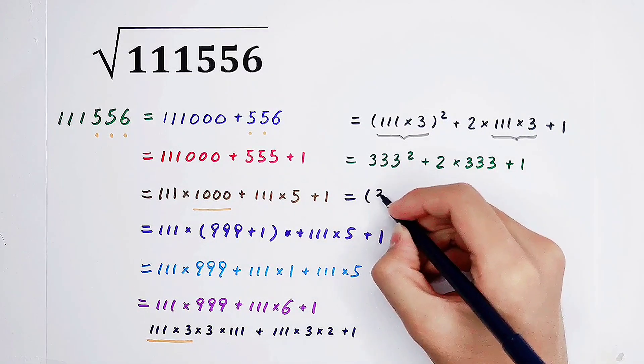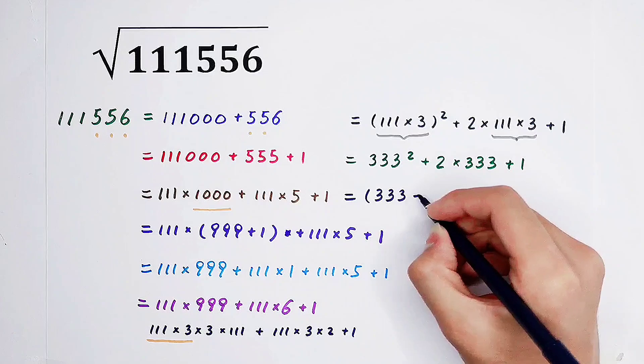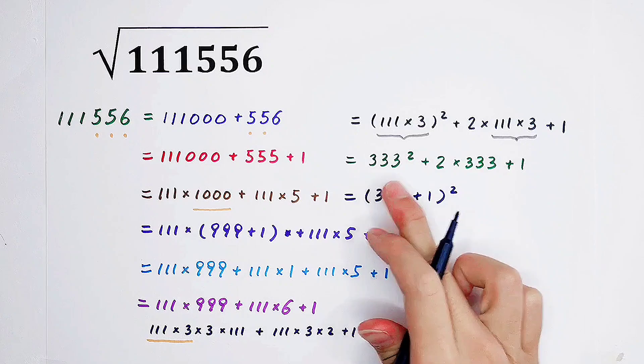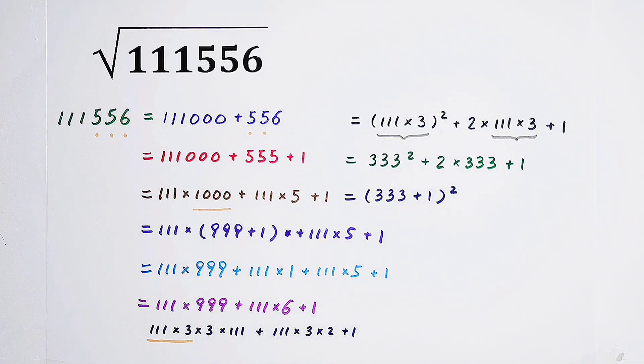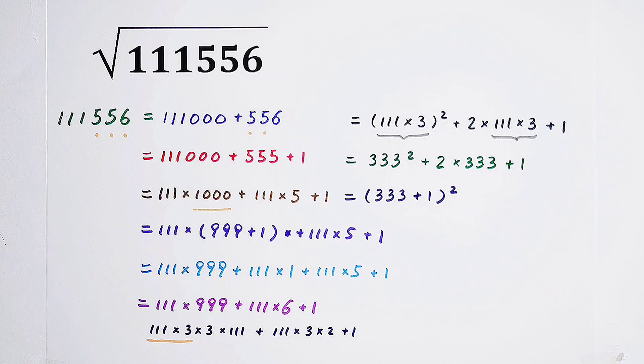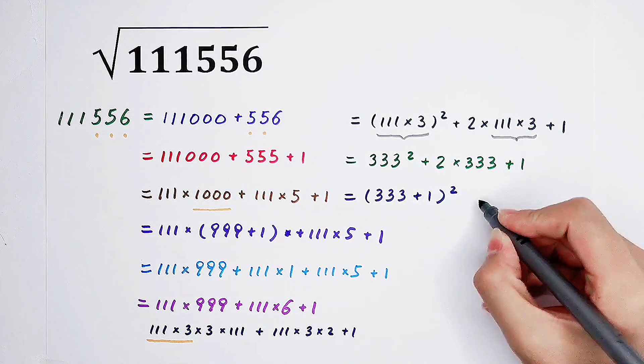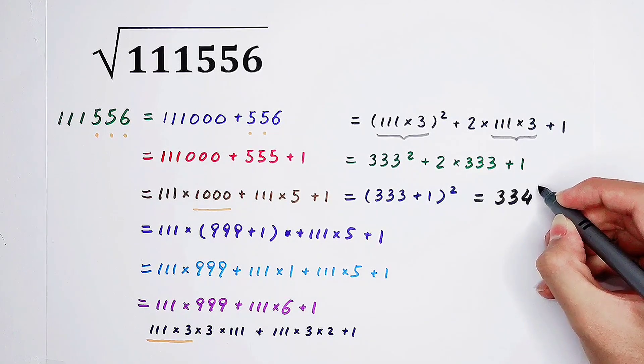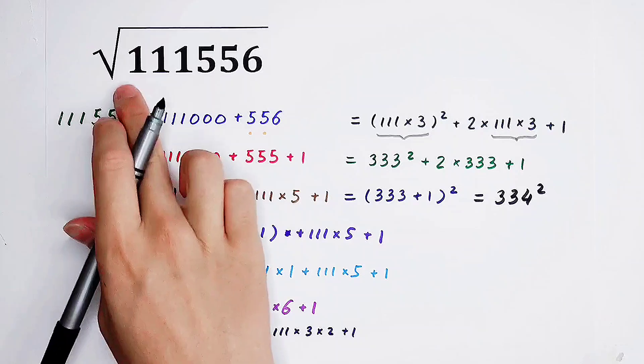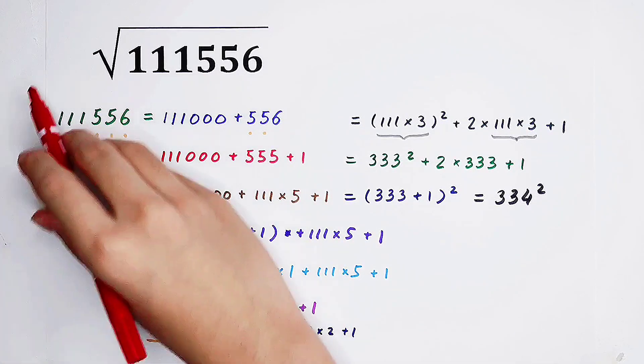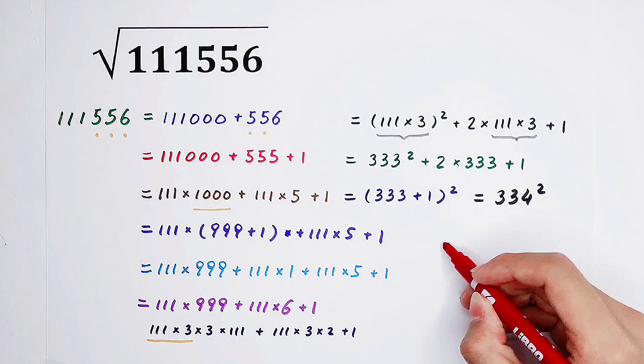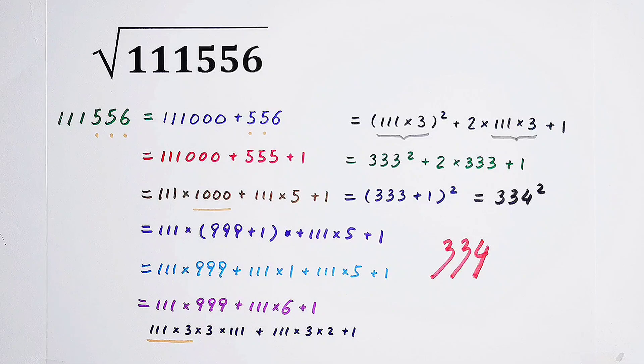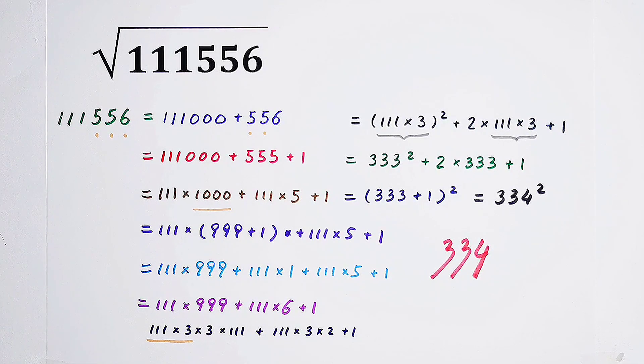Since the answer is 333, plus 1, or squared. By using the formula, a squared plus 2ab, then plus b squared, equals a plus b, or squared. So the value of this term is equal to 334, or squared. That's the value of 111556. With the square root as a code, the answer is 334. Do you get it? Do you get this trick?